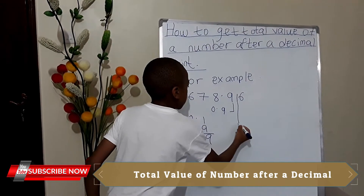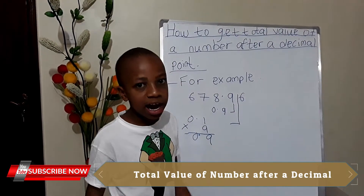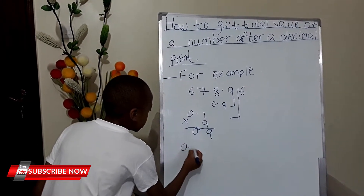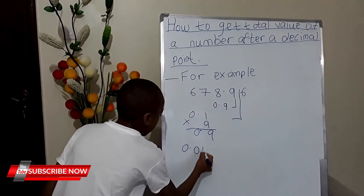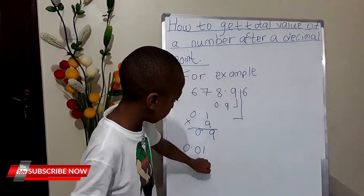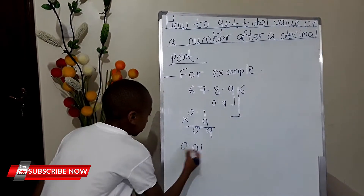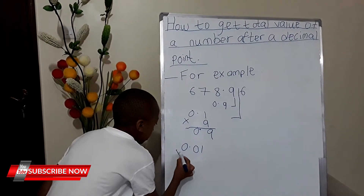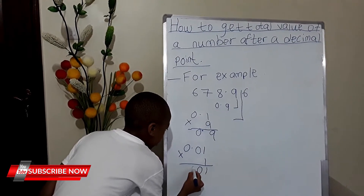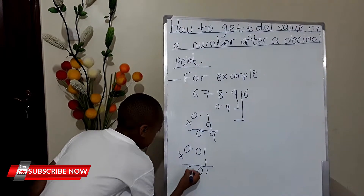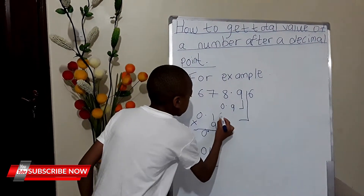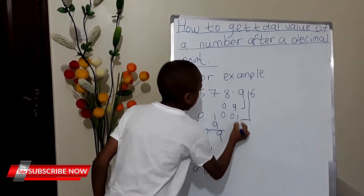When you come to 1, hundredths is written this way: 0.01. That is hundredths. So when they give you 1, you multiply by 1 so that you can get the total value of 1. The total value of 1 is 0.01.